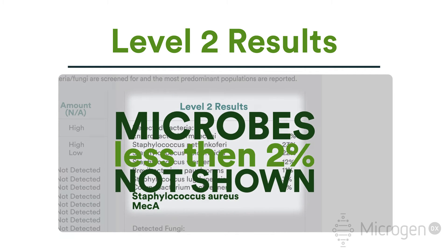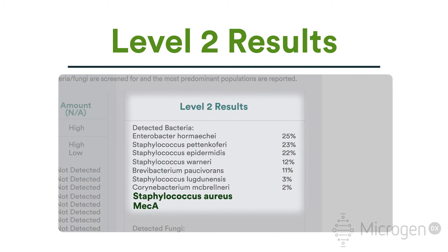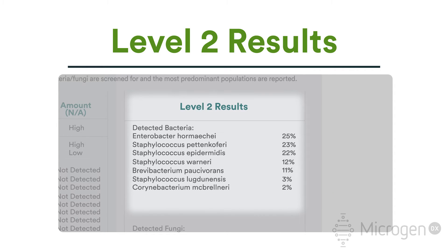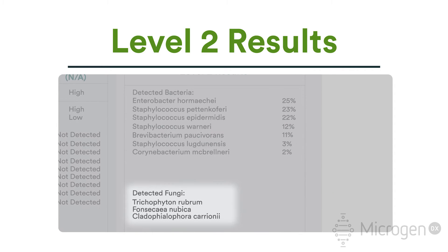For example, if MEK-A and Staphylococcus aureus has been reported in level 1, but in level 2 results Staphylococcus aureus is not listed, it is because the Staphylococcus aureus made up less than 2% of the DNA identified in the level 2 and it is not reported. If detected, fungi is listed next.